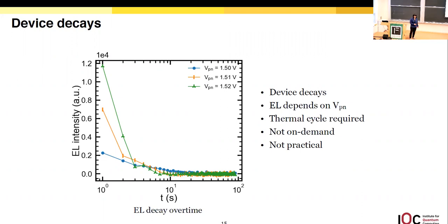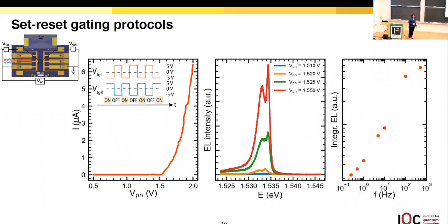This poses a problem. We set out to build a reliable continuous operation single photon source. This whole thermal cycling thing made it impossible. It's not on demand, not practical. We need to come up with a way to deal with this. Further research into the literature also shows this is not a unique problem for our devices. For a few groups doing lateral PIN junctions, they also see similar instability or decay problems with their devices. Remember the ambipolar operation I mentioned about our device? It turns out to be the key to solve our problems. We could reset the charge in the device by changing the gate voltages. We could also reach continuous operation by switching the gate voltage at a frequency. That's what we called set-reset gating protocols.